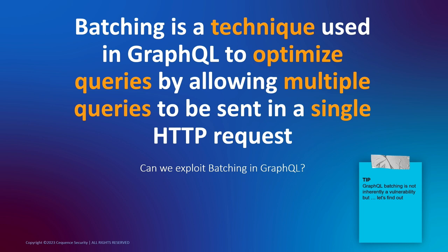You may have come across the concept of rate limiting — where you send a continuous stream of data in a given period of time and then get blocked with status code 429, 'Too Many Requests.' If you're a bug hunter or penetration tester, you've encountered this scenario. Surprisingly, batching is one way to bypass rate limiting, because only one request is sent but it contains multiple queries and returns multiple responses.